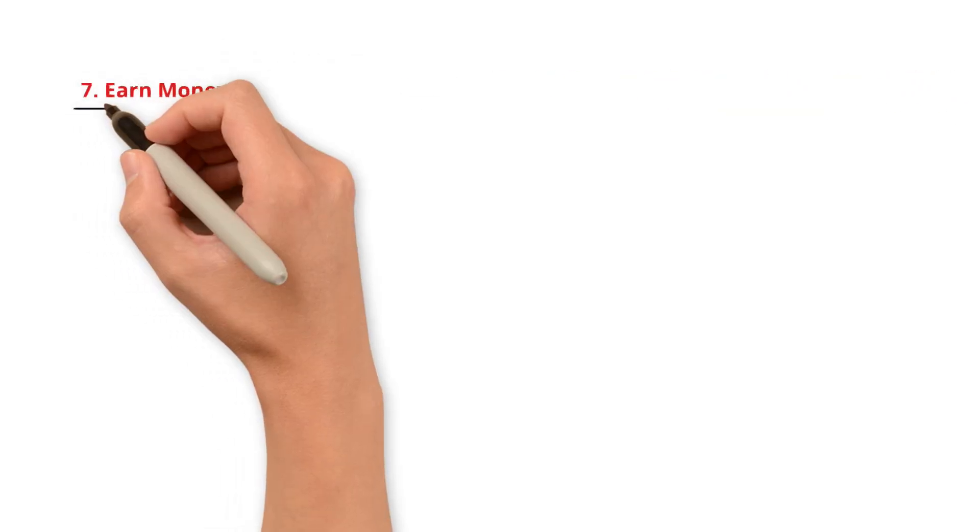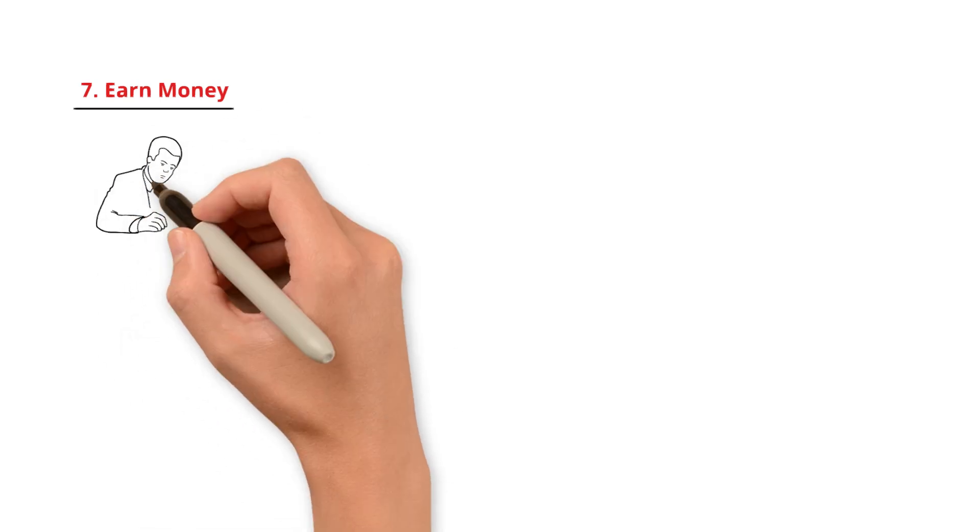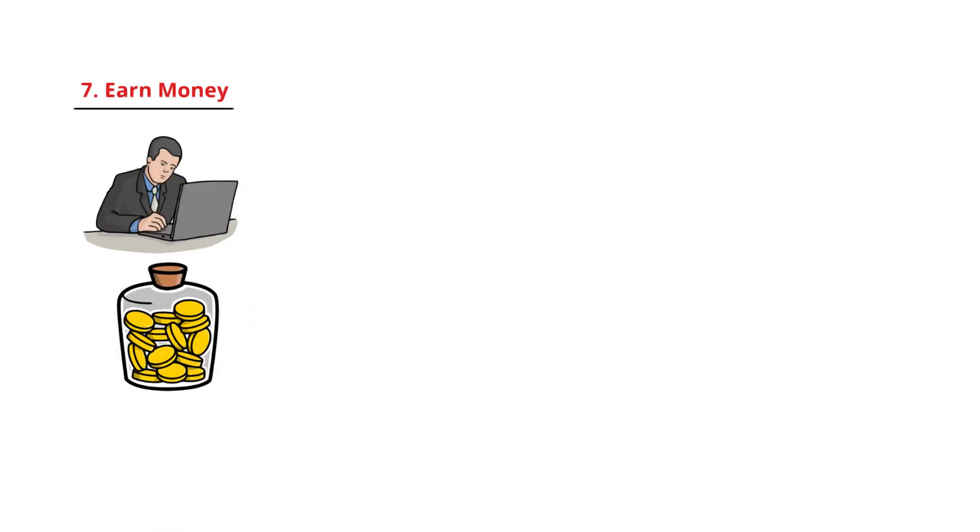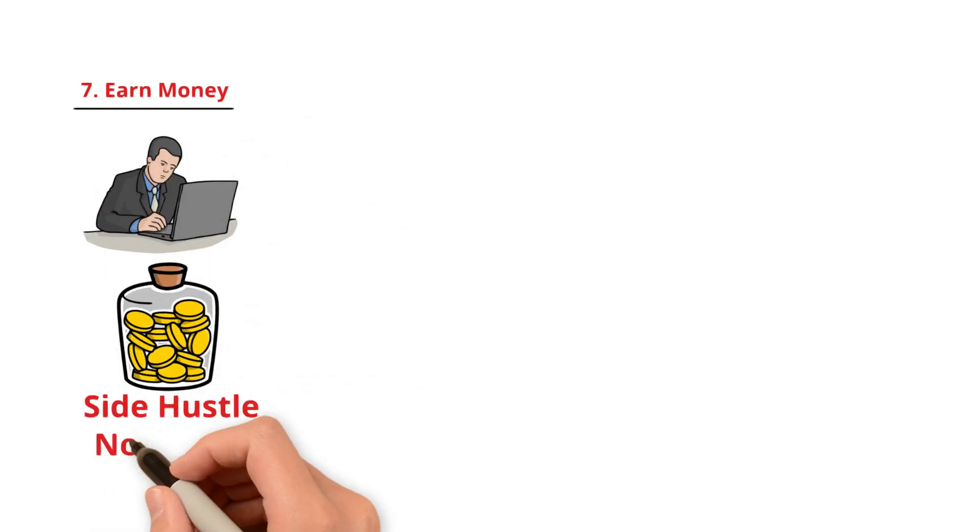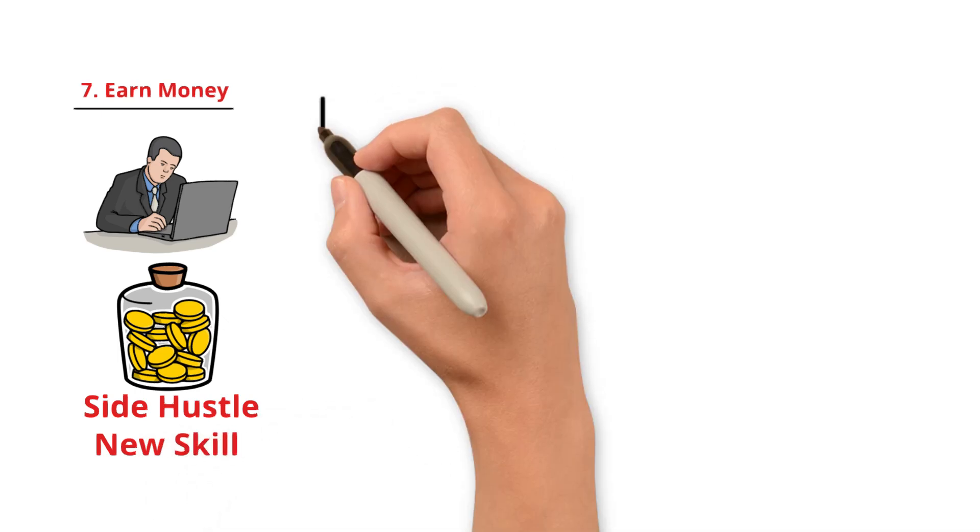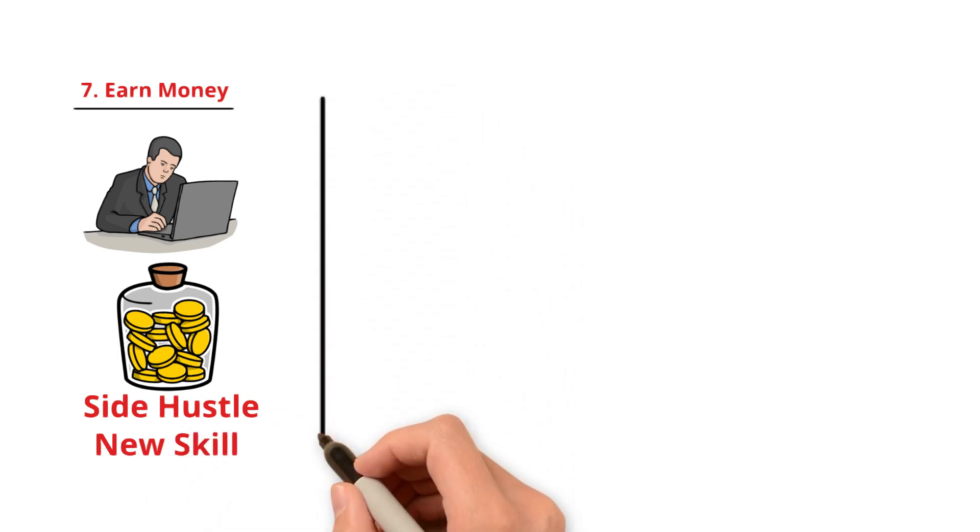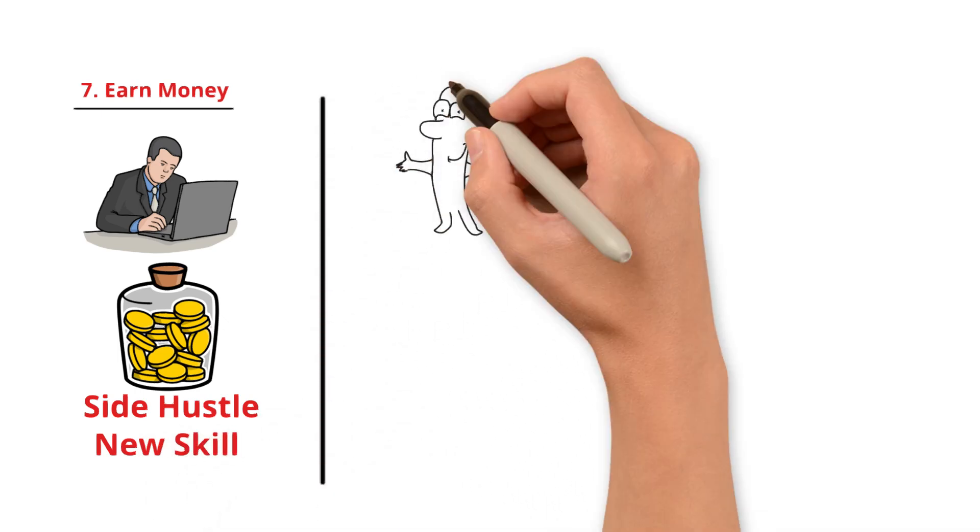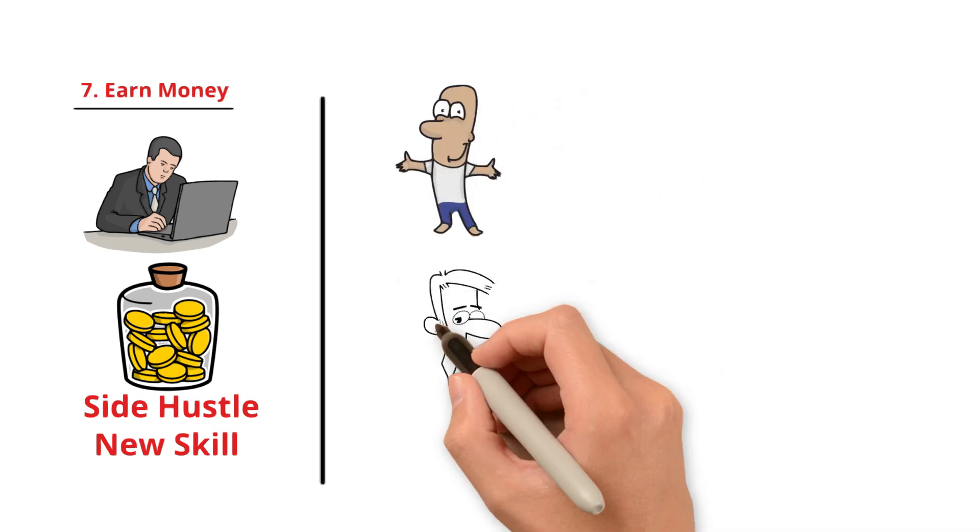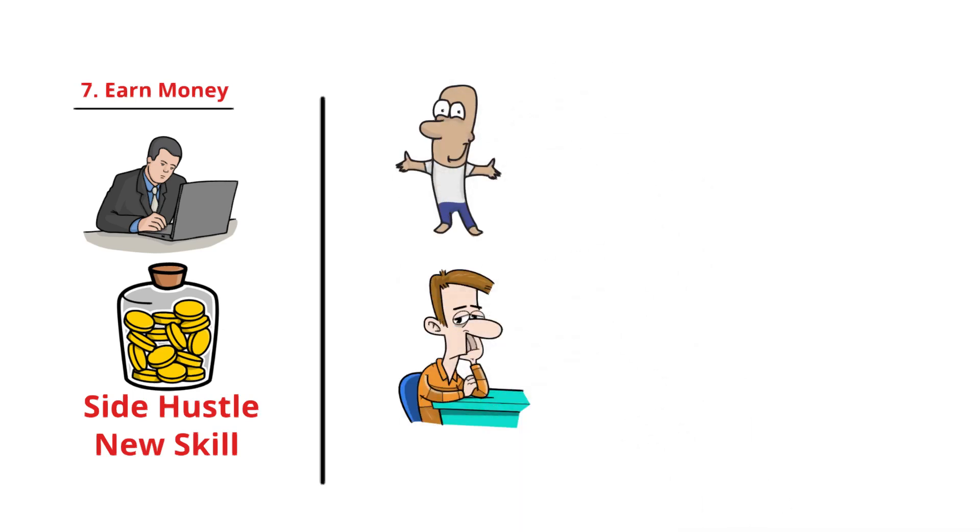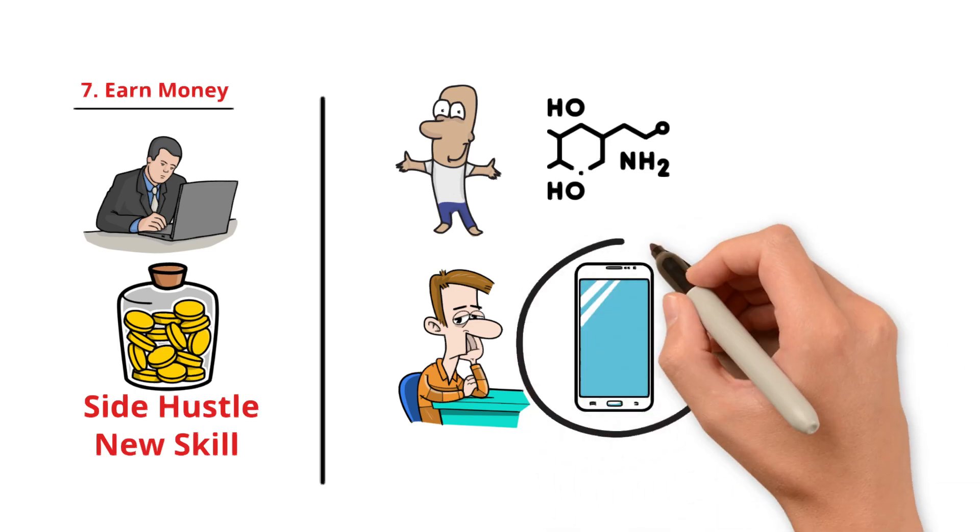Number seven. Earn money. Do something productive with your time that leads to tangible results. Whether it's starting a side hustle or working on a new skill, dopamine is better used for progress than for distractions. By doing this, you can start to regulate dopamine in a healthy way. But here's the thing. It's hard at first and you'll have to face resistance, like when dopamine screams at you to check your phone. But you've got to fight back.